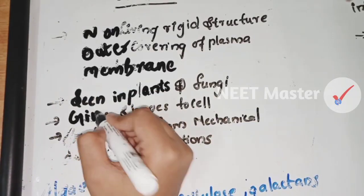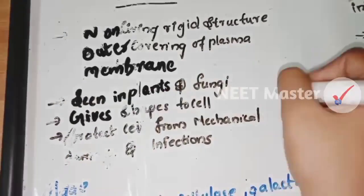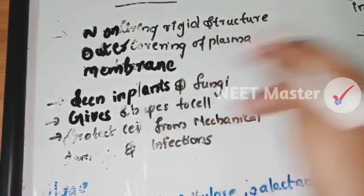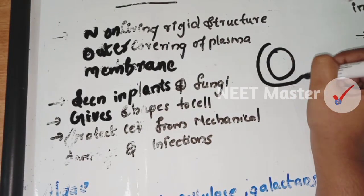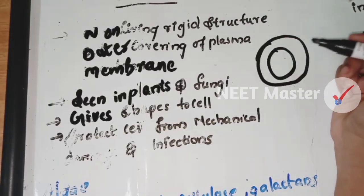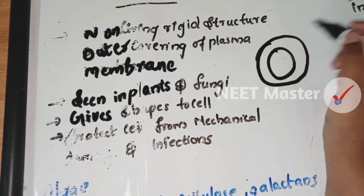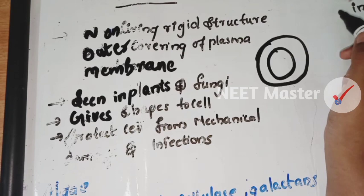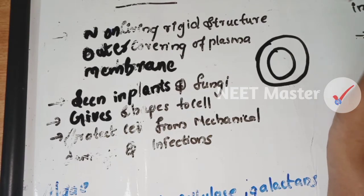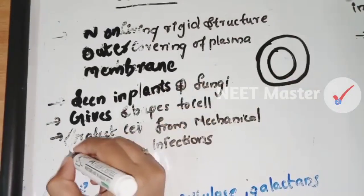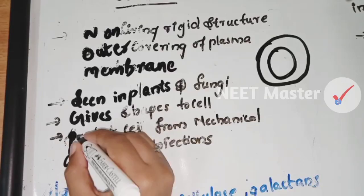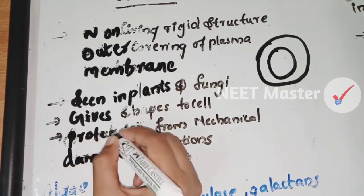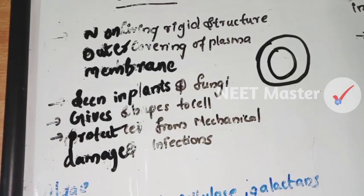The cell wall gives shape to the cell and provides structure. It will protect the cell from mechanical damage and infection.